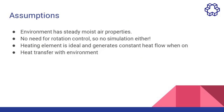Let's talk about what simplification assumptions we need so that our simulation is as simple as possible but not too far from reality. First, we consider that the environment has steady moist air properties — meaning pressure, temperature, and humidity of the environment are all consistent during these 21 days. The rotation of the egg is an important part of the process, but it's a simple mechanical action so we omit it from our simulation. We also assume our heating element is ideal and generates constant heat flow when turned on. Finally, we have some heat transfer with the environment, which I'll discuss in detail later.